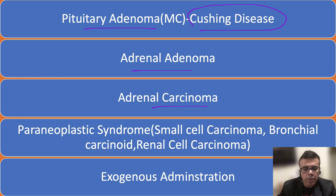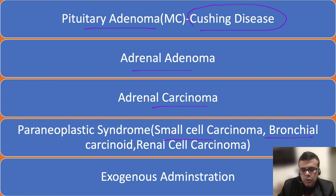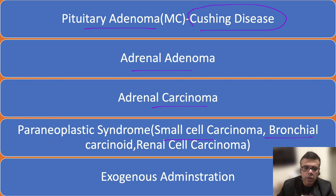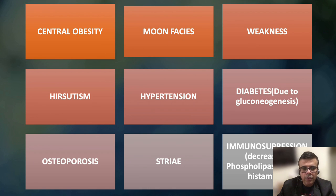Various paraneoplastic syndromes can elaborate excess ACTH, leading to increased cortisol levels and Cushing syndrome. Small cell carcinomas, bronchial carcinoid, and renal cell carcinomas are associated with Cushing syndrome. Exogenous administration of corticosteroids is also a potential cause. Pituitary adenoma accounts for almost 60–70% of endogenous cases of Cushing syndrome.